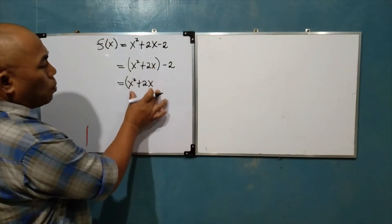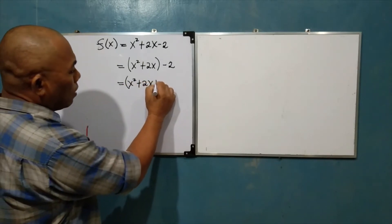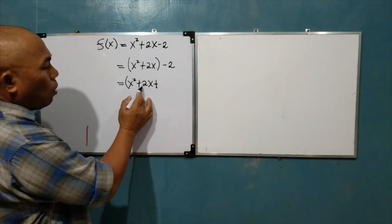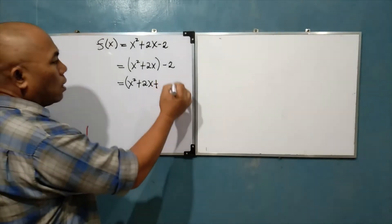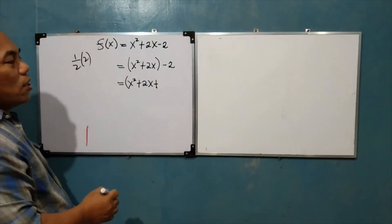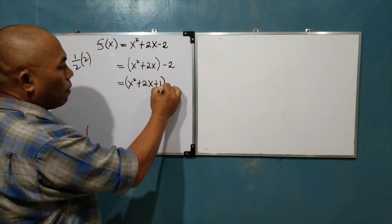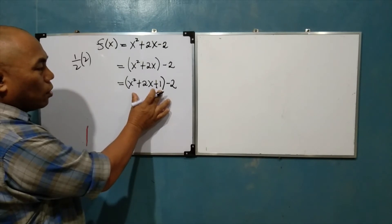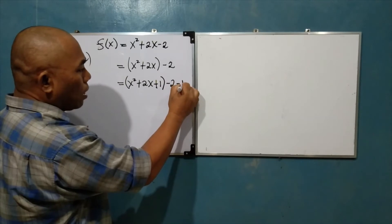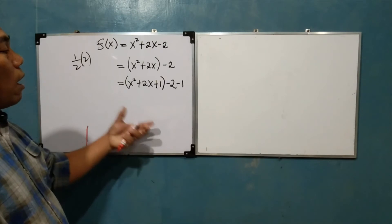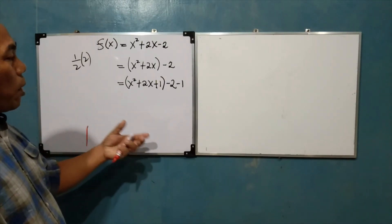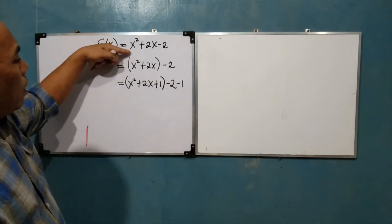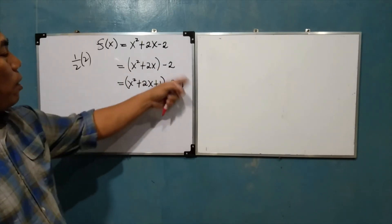For this to be expressed as a perfect square trinomial, we will add a third constant term. You get one half of the numerical coefficient of the linear term — one half of 2 is 1 — then raise it to the second power: that is 1. So you have (x² + 2x + 1) - 2. But do not forget that you added 1 inside, so you subtract 1 outside to maintain the expression. Although we added 1 here, we subtracted another 1, so the expression remains the same.